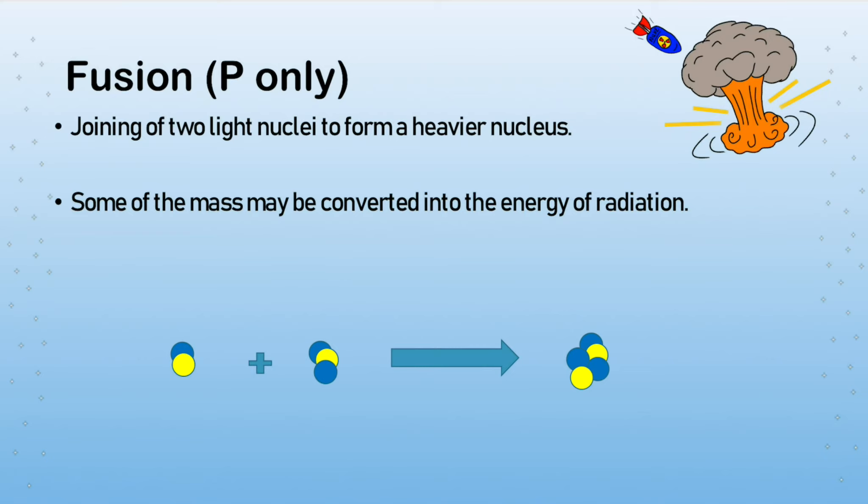So fission was splitting a large unstable nucleus. In fusion we are joining. Think of fusion it is joining of things together, fusing them together. And so the definition is the fusing or joining of two light nuclei to form a heavier nucleus. So these are obviously small and we're creating a larger nucleus.